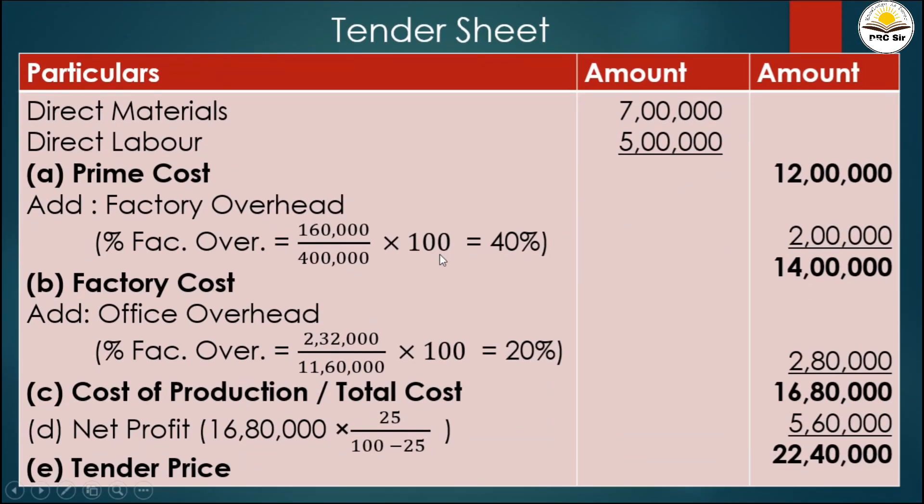So the percentage of factory overhead equals 1.6 lakhs divided by 4 lakhs times 100, which equals 40 percent. Factory overhead is 40 percent of direct labor.